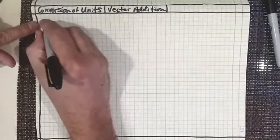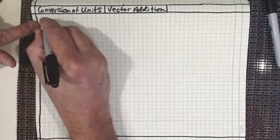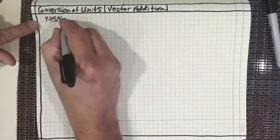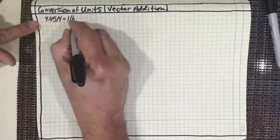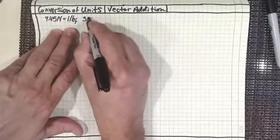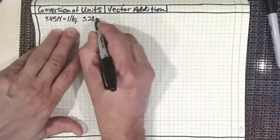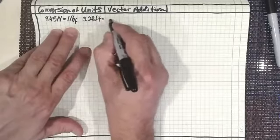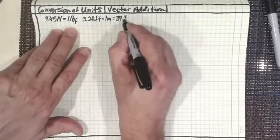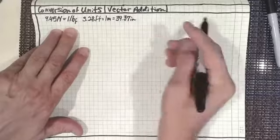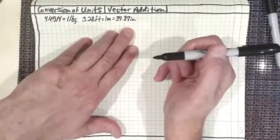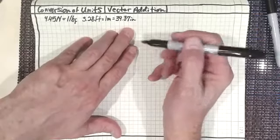For conversion of units, I just want to put down a couple things. 4.45 newtons equals one pound force. 3.28 feet equals one meter, equals 39.37 inches. So we can switch between the British gravitational system and the SI system of units.